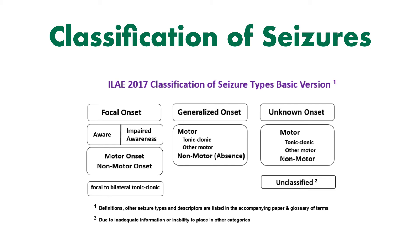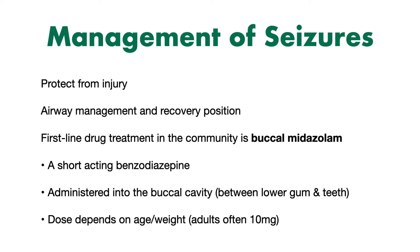Let's move on now to the management of seizures. Basic first aid measures are very important: protecting the patient from any injury, good airway management, and placing patients into the recovery position following the seizure. A tongue laceration may have caused bleeding into the mouth and throat, which could cause an airway problem. Patients can also have dysfunctional breathing during tonic-clonic seizures especially, and they may become very hypoxic. The first-line drug treatment in the community is buccal midazolam. Midazolam is a short-acting benzodiazepine administered into the buccal cavity — between the lower gum and the teeth — and it works to terminate seizure activity by disrupting the abnormal electrical activity in the brain.